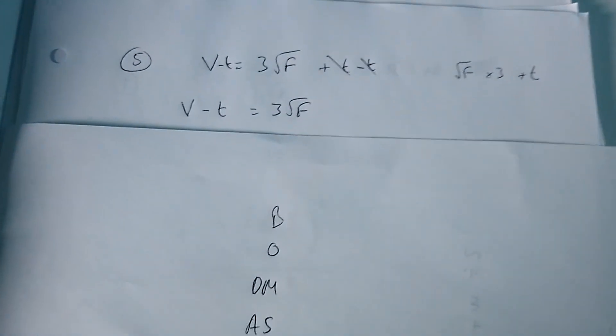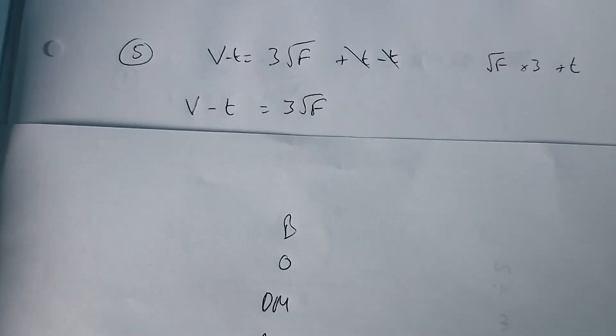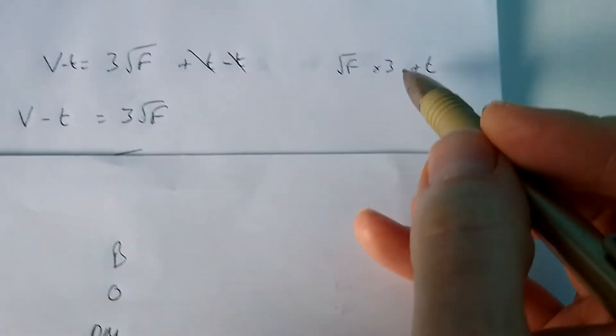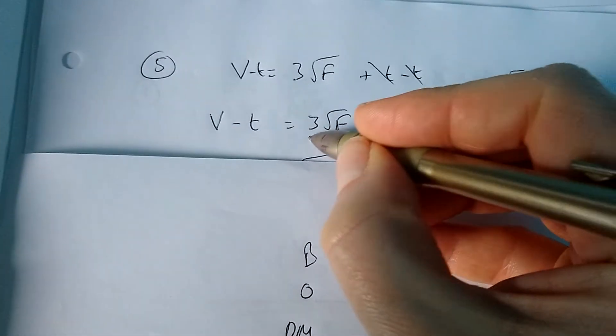Remember, whatever we do to one side of the equal sign, we must do exactly the same to the other. Now I want to undo multiplying by three, so I want to divide both sides by three.